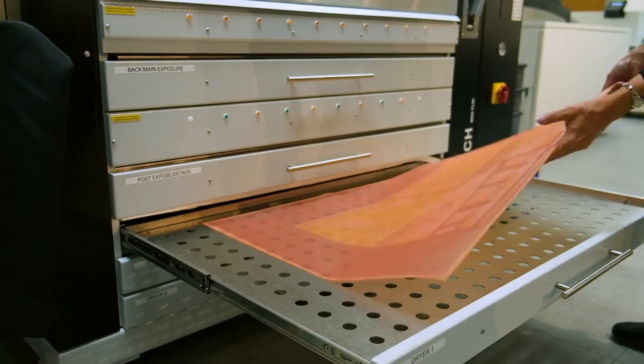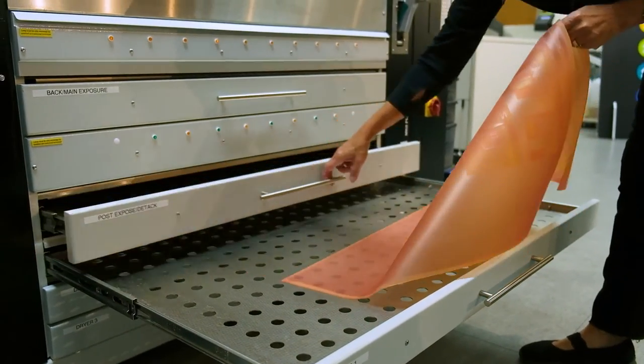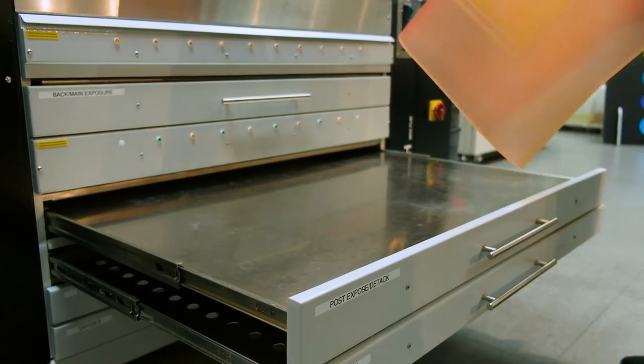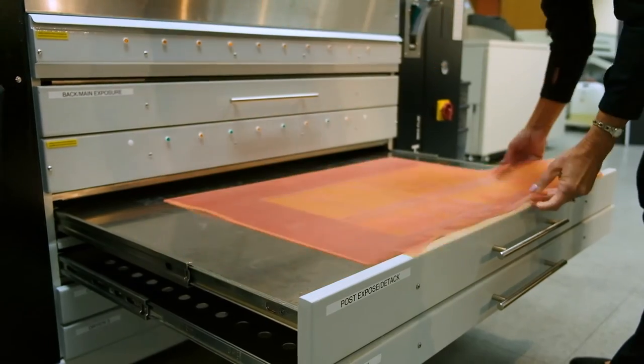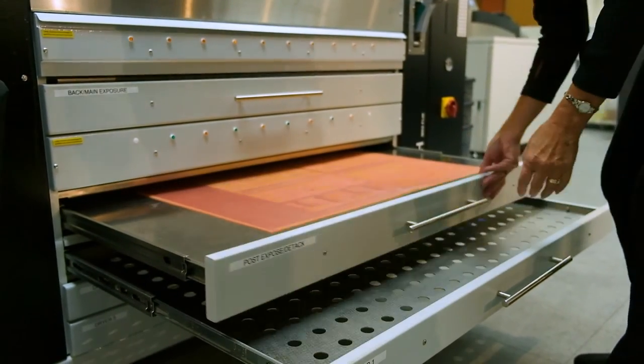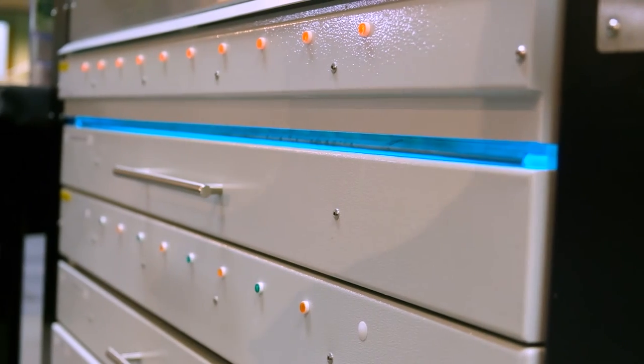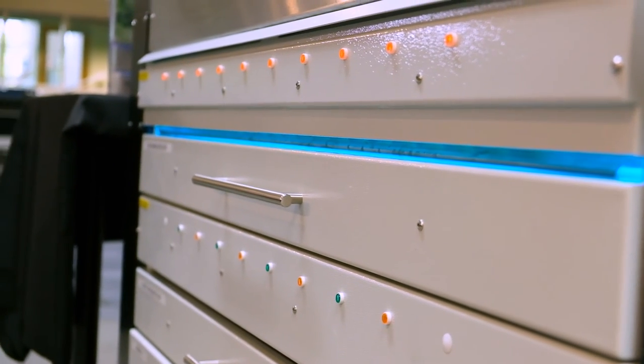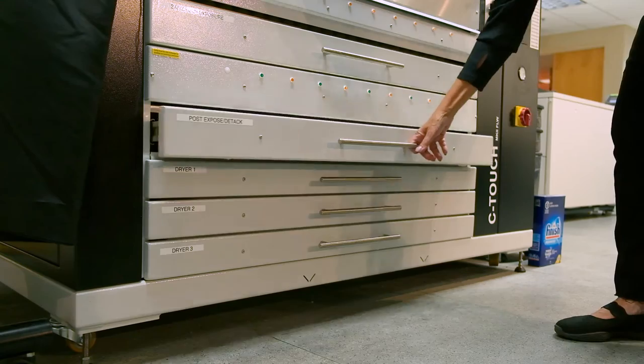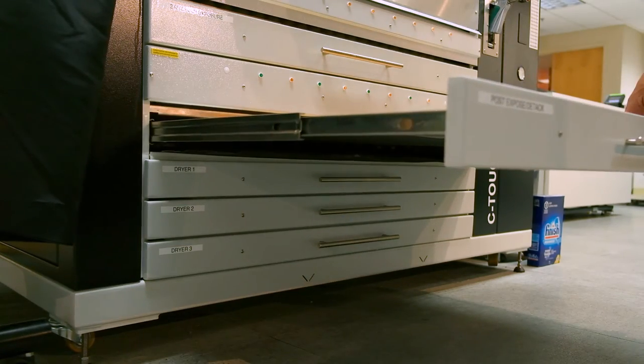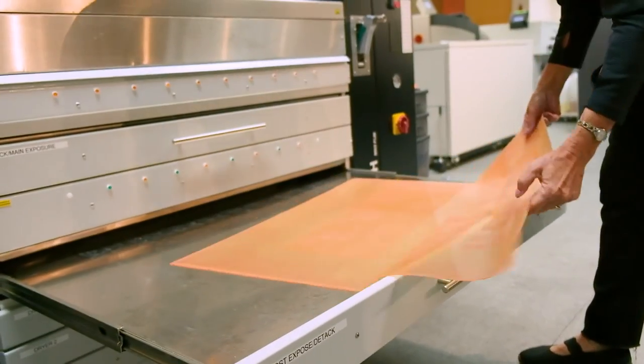When the dry time is complete, the plate is transferred to another drawer of the C-Touch for post-expose and de-tack that are accomplished simultaneously, represented by green and gold lights that are lit on the front of the C-Touch. Fujifilm will provide general exposure times and works with the customer to fine tune these settings for specific press conditions.